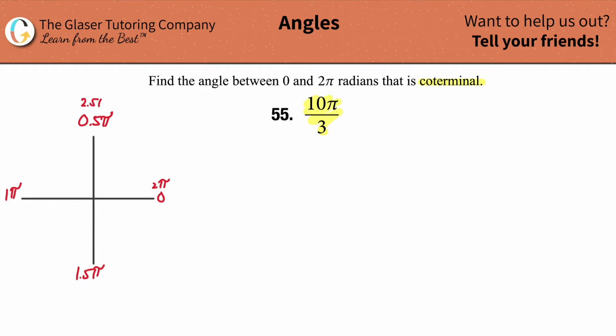And then this could be represented as 2.5π, this could be represented as 3π, this could be represented as 3.5π and on and on. Okay?